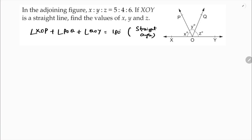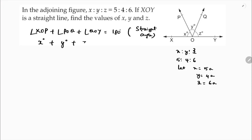I'll consider the angles using the given ratio: x is to y is to z is 5 is to 4 is to 6. So let x equal 5a, y equal 4a, and z equal 6a. Therefore, angle XOP is x degrees, POQ is y, and QOY is z, and they sum to 180 degrees.